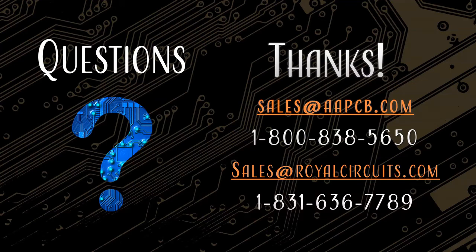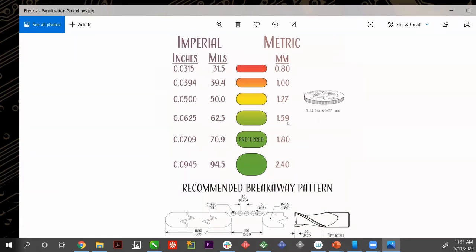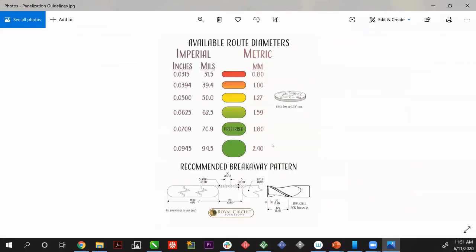There was a question about router sizes. We have standard router bit sizes: 31 mil, 39 mil, 50, 62, 70, and 94 mil. Each one is used for specific cutouts. If your board has a tiny cutout or slot that isn't going to work with a drill, we're going to use a router. It also applies to board thickness — we can't cut a 125-mil thick board with a 30-mil router bit. We'd be breaking bits every couple of minutes. So if you do have cutouts, slots, or you're designing your own array, keep these standard sizes in mind.